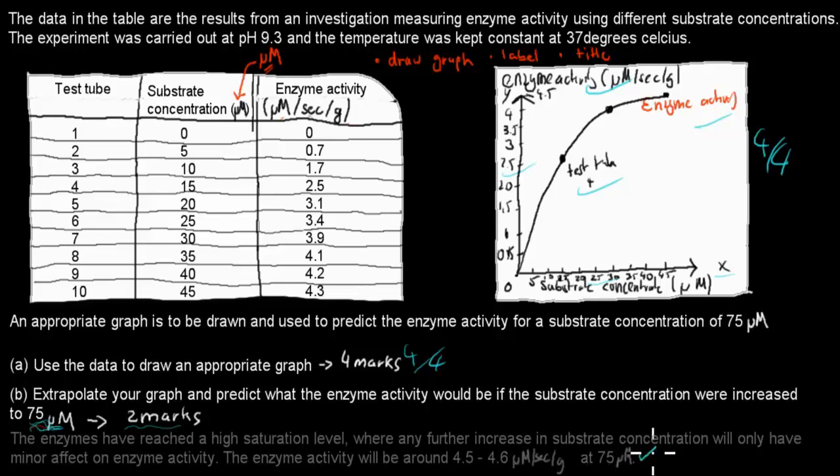The enzyme activity will be around 4.5 to 4.6 micromolar per second per gram at 75 micromolar. This gets you 2 marks. You're stating that the enzyme activity will be around 4.5 to 4.6 μM/sec/g. I've given the first part to show I understand what I'm talking about - the fact that enzyme activity doesn't increase much further because we've reached the saturation point.